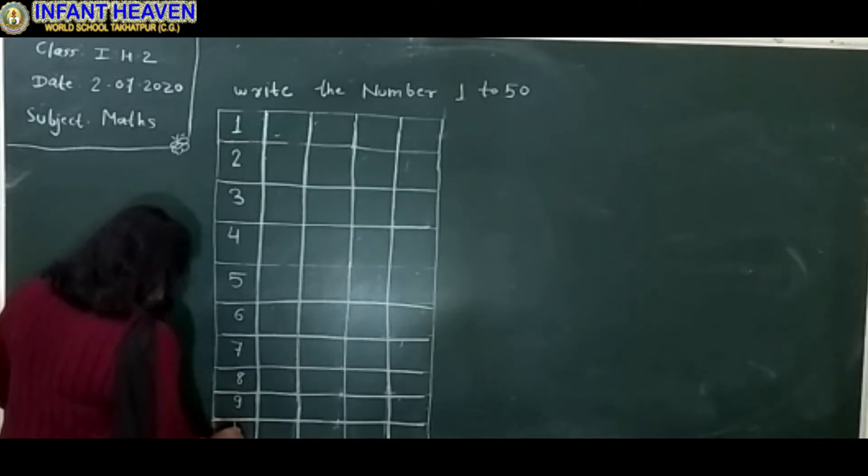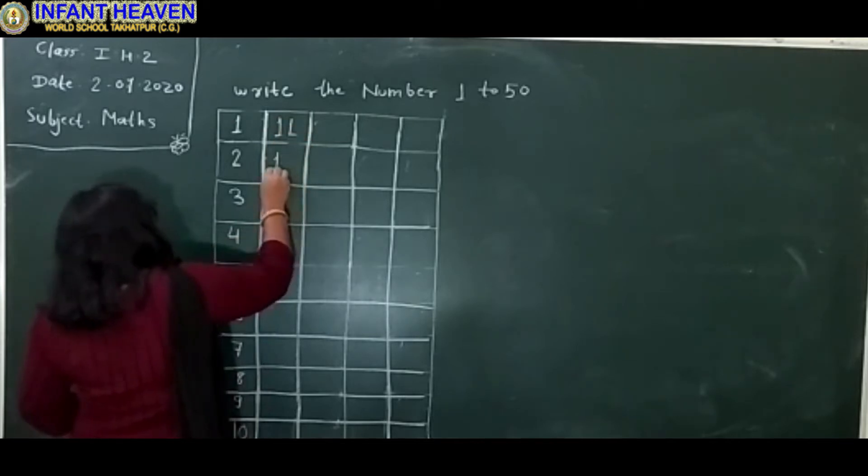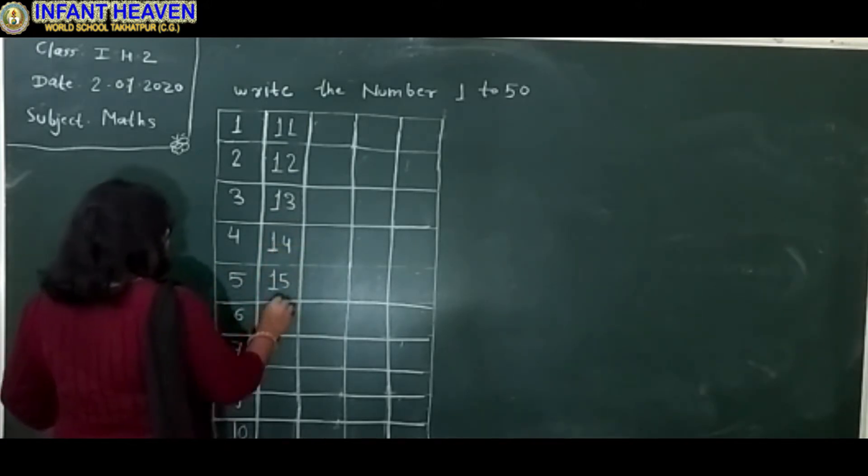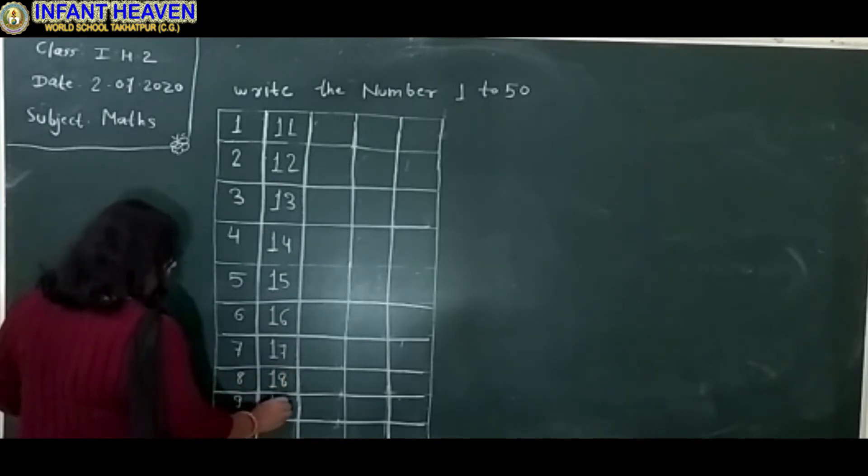9, 10. 1 to 11, 1 to 12, 1 to 30, 1 to 40, 1 to 50, 1 to 16, 1 to 17, 1 to 18, 1 to 19, 2 to 0, 20.